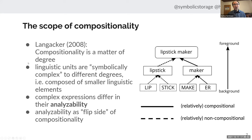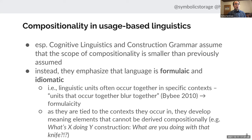Langacker illustrates this with the example 'lipstick maker' — a compound composed of two compounds. While 'lipstick' is a fairly lexicalized compound, 'maker' is a relatively compositional derivative. So linguistic units differ in the degree to which they can be analyzed. Cognitive linguistics and construction grammar assume that the scope of compositionality is much smaller than previously assumed, emphasizing that language is formulaic and idiomatic — for example, linguistic units often occur together in specific contexts. As Bybee put it: units that occur together blur together.